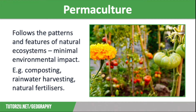Our second sustainable strategy is permaculture. Permaculture is food production which follows the patterns and features of natural ecosystems to minimise the impact on the natural environment. It includes harvesting rainwater, composting waste, and redesigning gardens to include a wide variety of plants and trees, which provide a range of wildlife habitats.